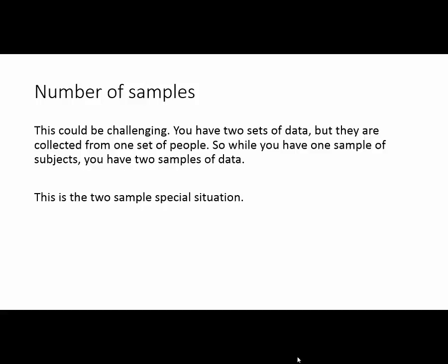This is a challenging situation. You actually only have one set of people, the students that you're giving this practice test and registry exam to. But you have two sets of data. You have their practice test scores, and you have their registry exam scores. So while you do have one sample of subjects, you actually have two samples of data. And there's a natural linking. The practice test score of student A goes with the registry exam score of student A. This is the two sample special situation.